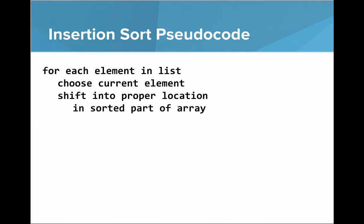So what does the pseudocode look like? For each element in the list, choose the current element and shift it into its proper location in the sorted part of the array. Note that the key difference from selection sort is it's not the overall remaining minimum in the whole list — it's just the next item in the list. That left sorted part of the list is all sorted with respect to itself; it's not necessarily the first n minimum values like with selection sort.